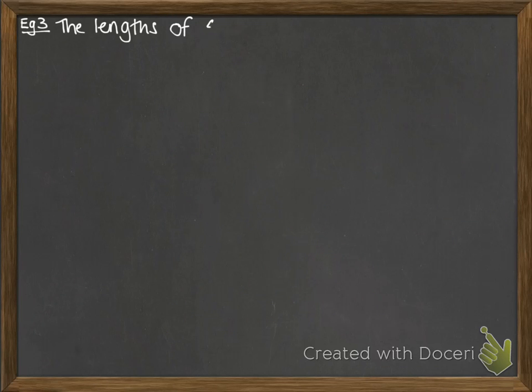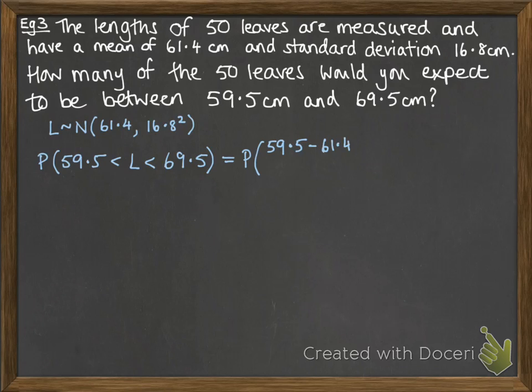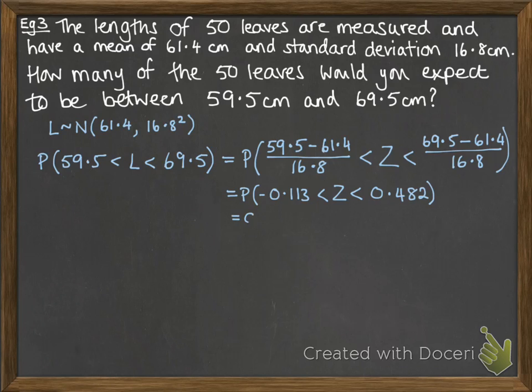Next one. This one's taking a worded question and applying the normal distribution. So the lengths of 50 leaves are measured and have a mean of 61.4 centimeters. Standard deviation is 16.8. How many of the 50 leaves would you expect to be between 59.5 and 69.5 centimeters? So we're going to talk about L for the length of leaves. Follows a normal distribution with those details that were given in the question. We want the probability that it's between those two values. We need to transfer them into something that's equivalent on the z curve.